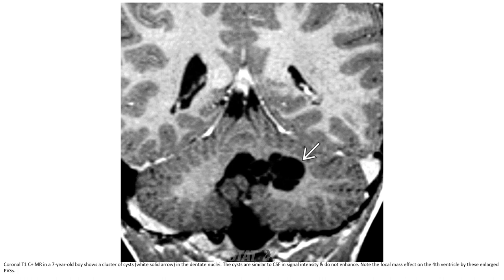T1 image in a seven-year-old boy shows a cluster of cysts in the putamen nucleus. The cysts are similar to CSF in signal intensity and do not enhance. Note the focal mass effect on the adjacent ventricle, which is a finding seen in large PVS.